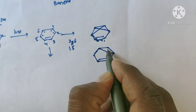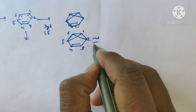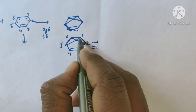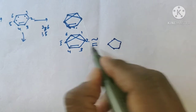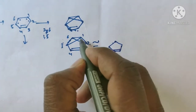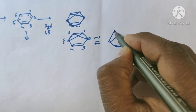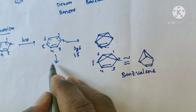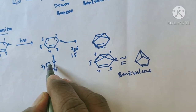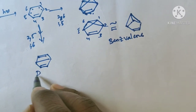This structure is benzvalene. If we reorient it, we get this type of structure — this is benzvalene. From this, we may also get Dewar benzene — that means if a bond is formed between the second and fifth carbon and the first and sixth carbon, then we get Dewar benzene. So this is Dewar benzene.